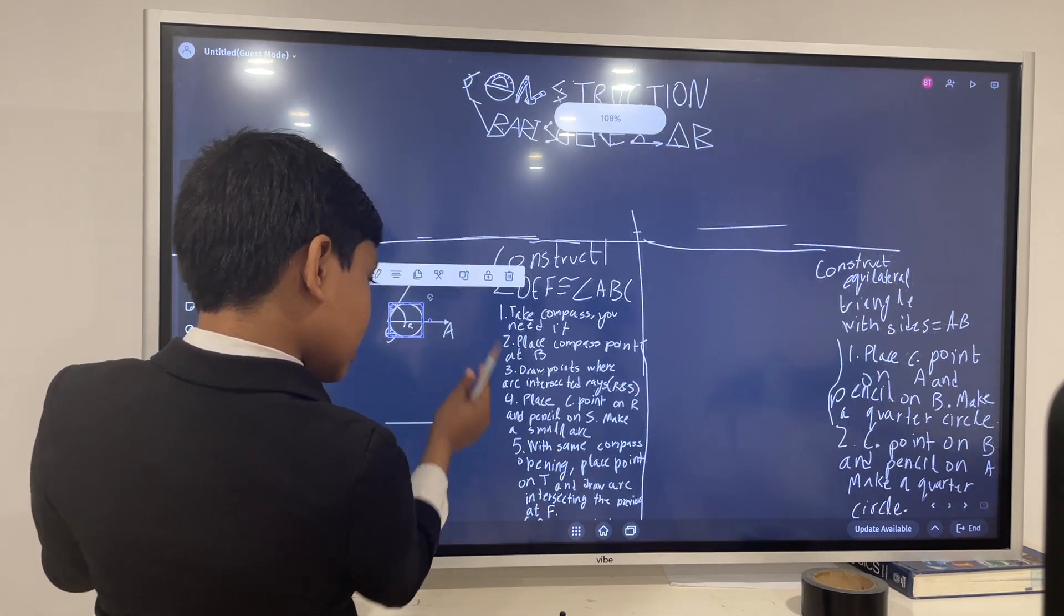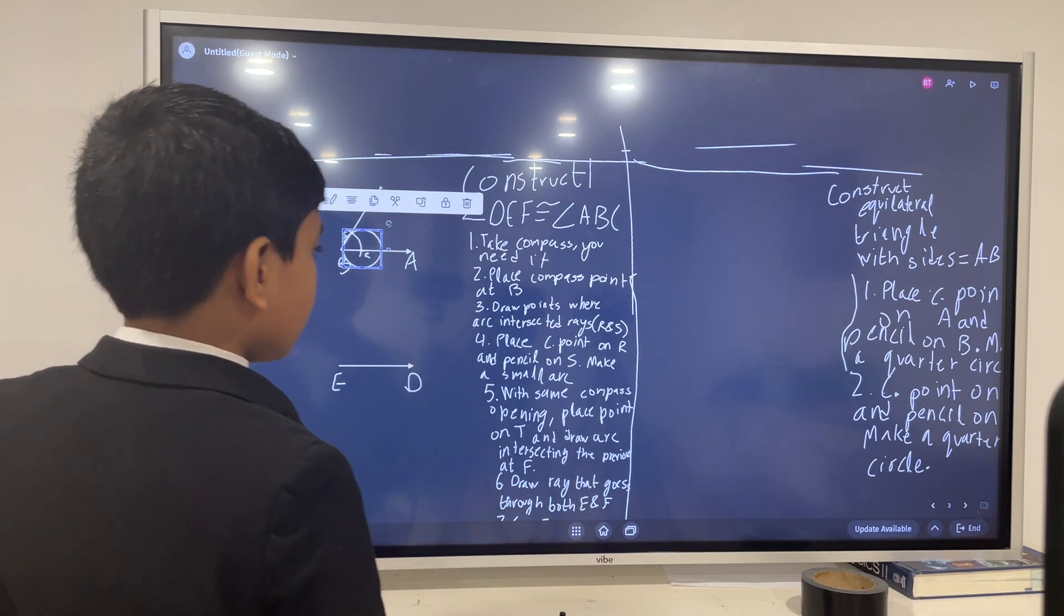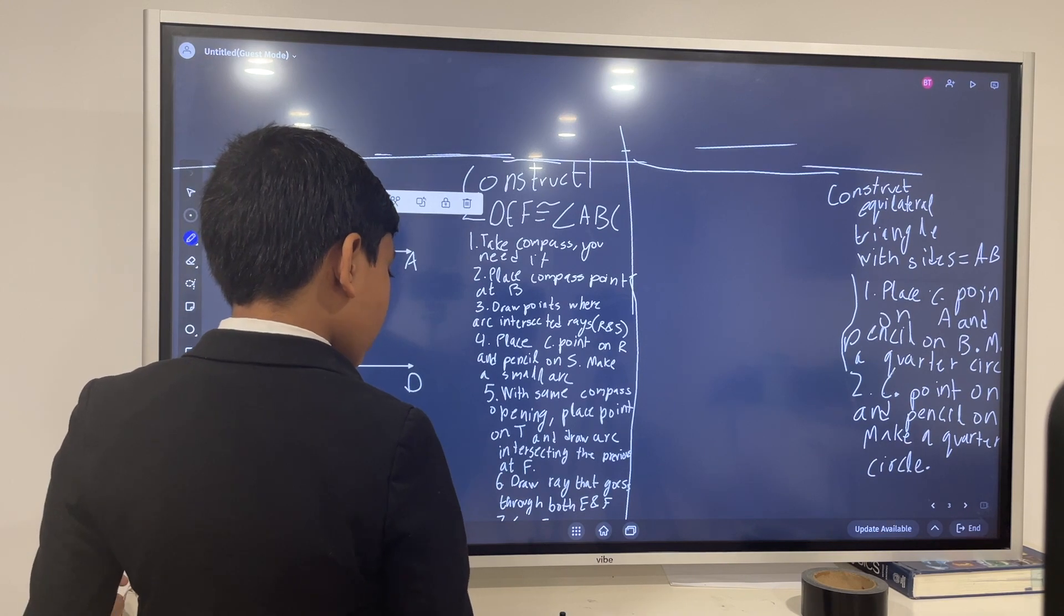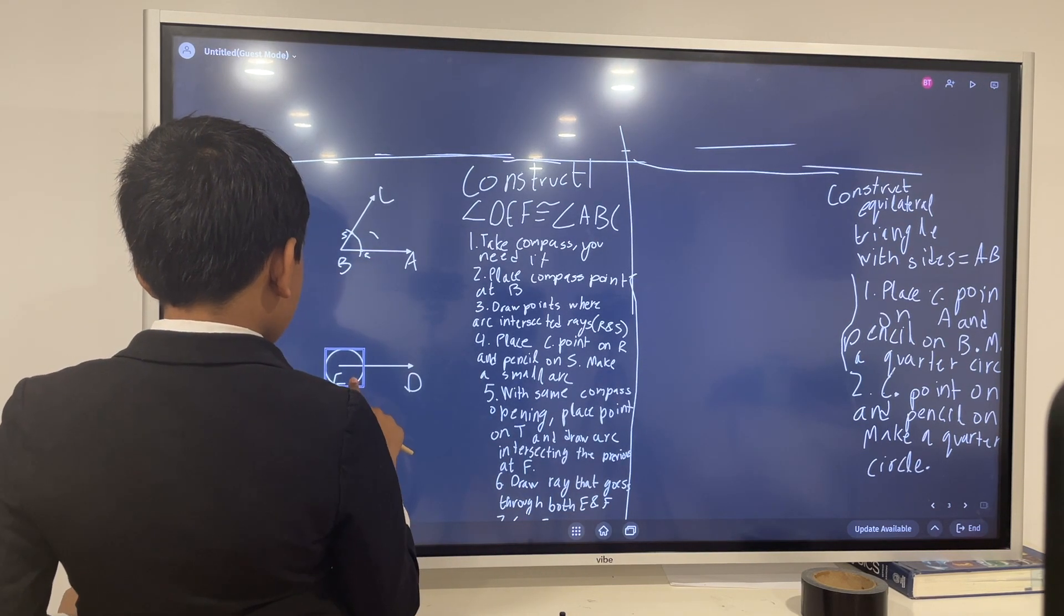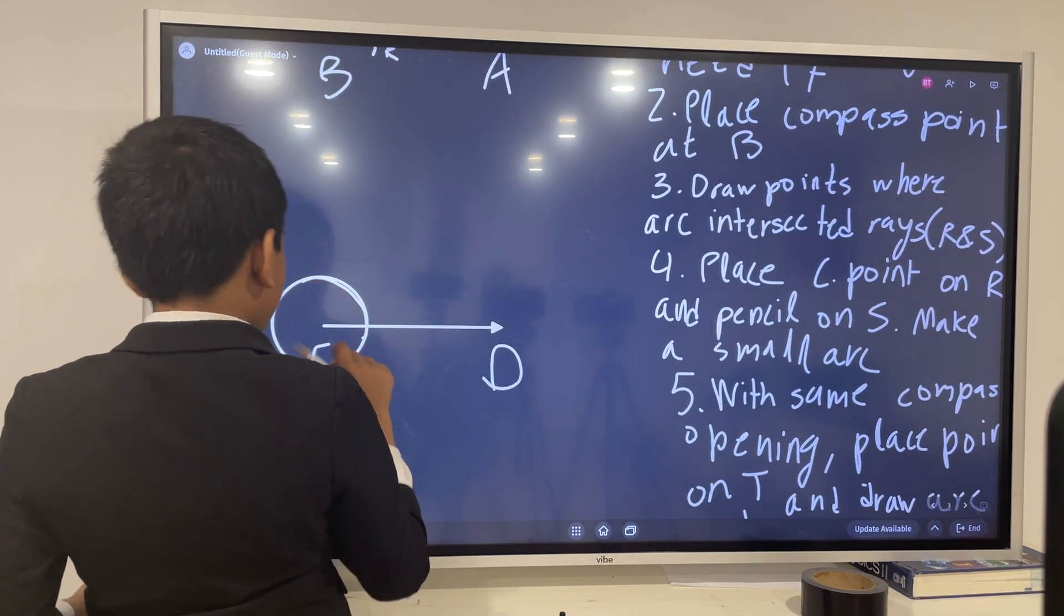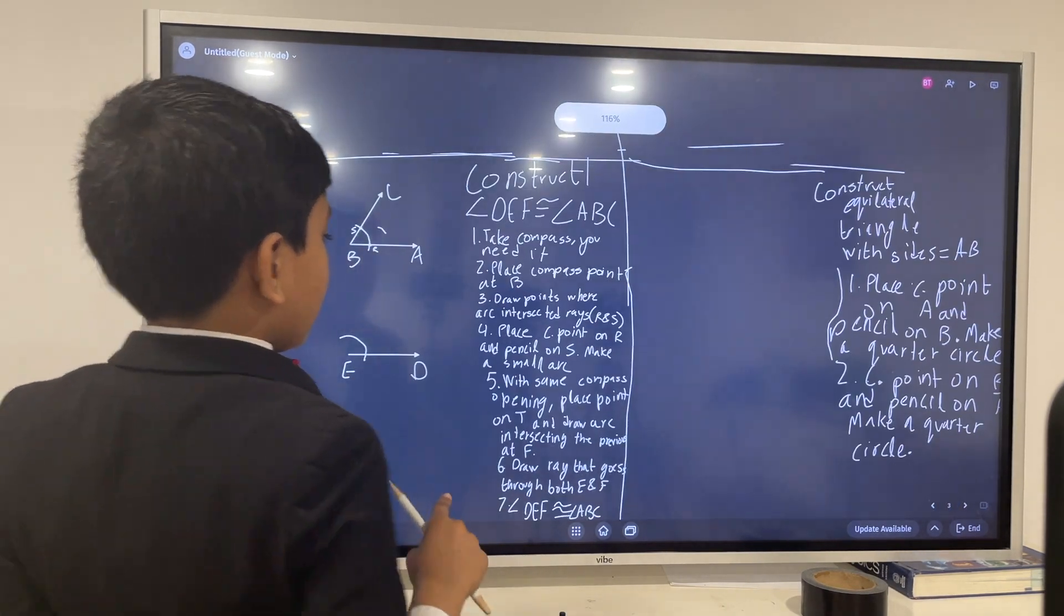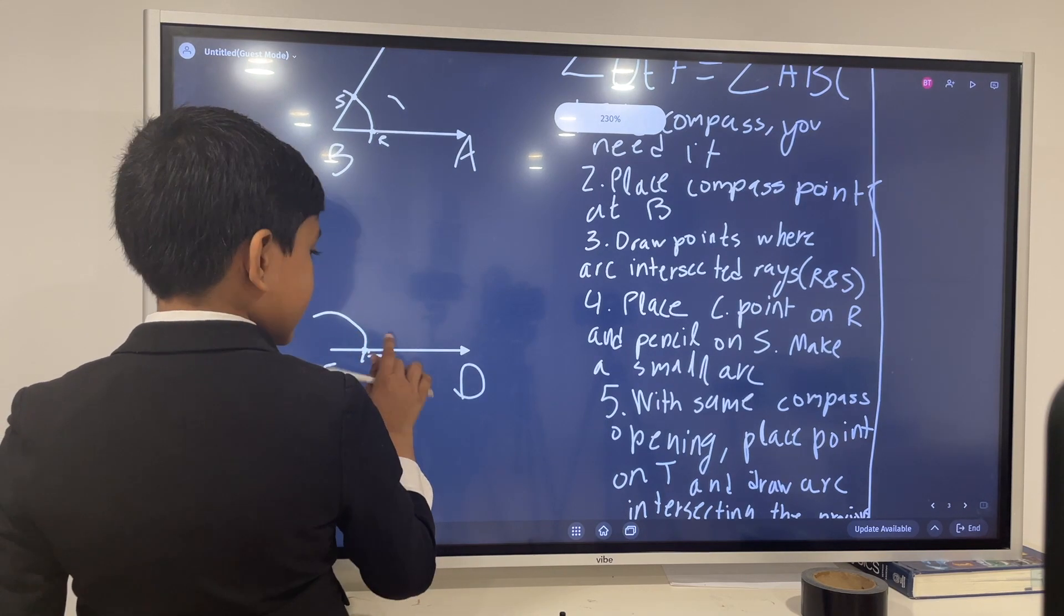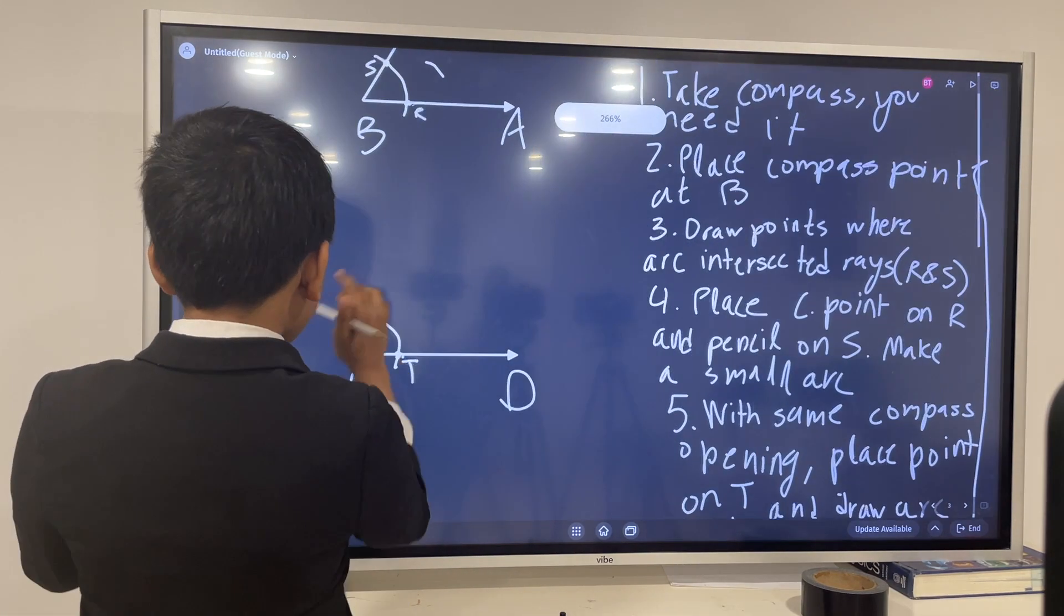I should probably use this. And now, what does it want us to do? With the same compass opening, so the same radius, place point on T. Wait, place compass point at B. Place point at T and draw an arc intersecting the previous at S. So let's move our attention over here. If we have E, let's place our point on E. Then we can make an arc like this. And it wants us to place our point on T, the intersection, and draw an arc intersecting the previous arc at F.